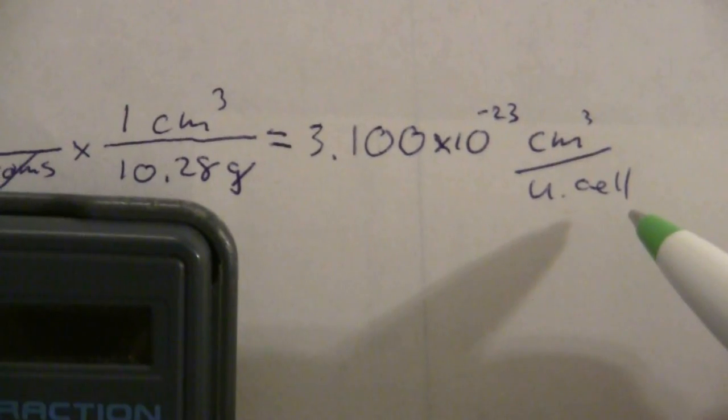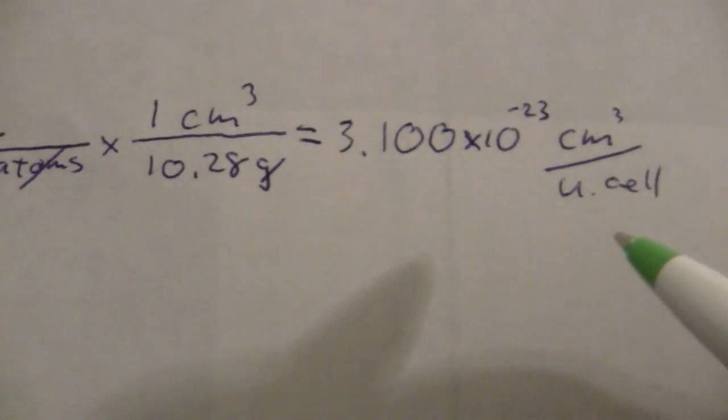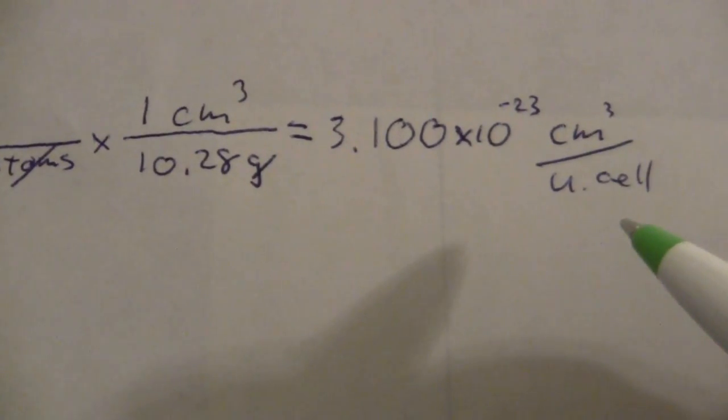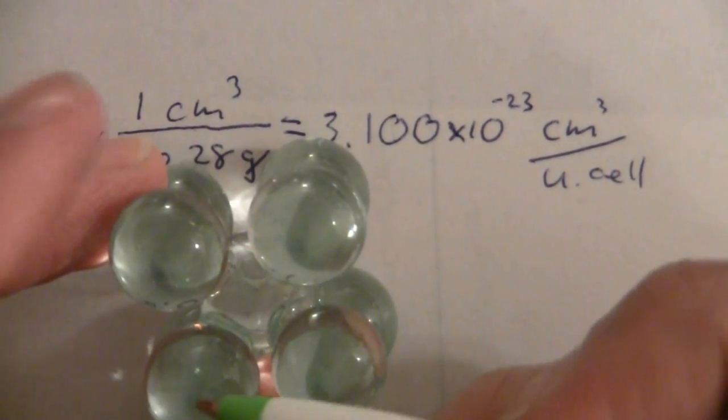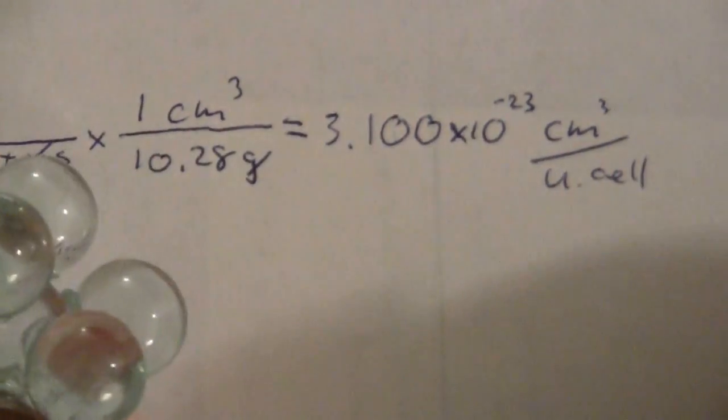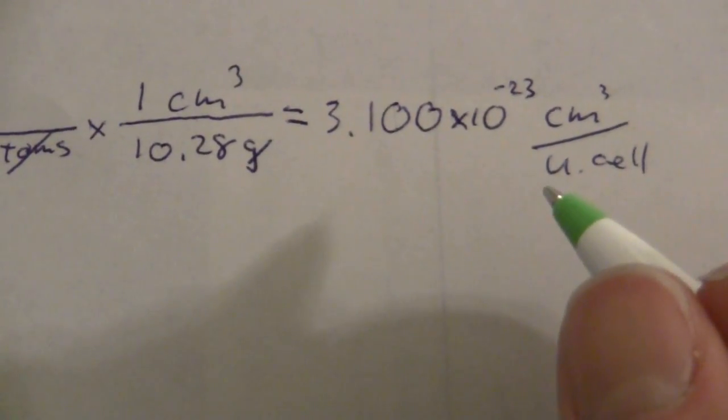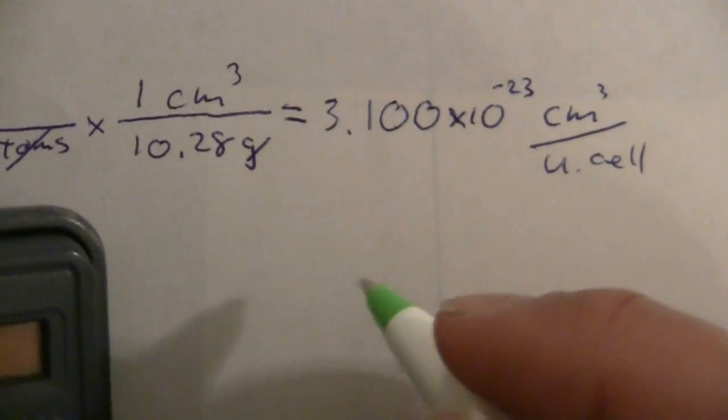So now how am I going to find the length of one side of the unit cell? That is the volume of the unit cell. So I need to take the cube root of this value to give me the length.